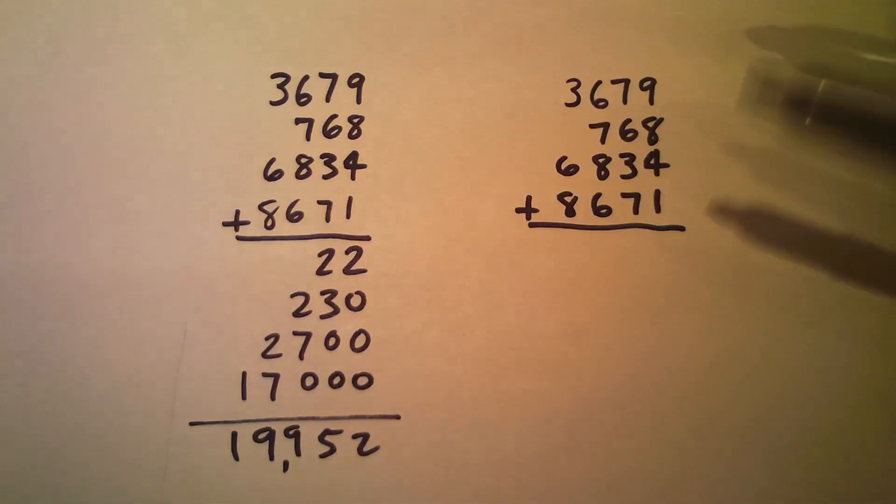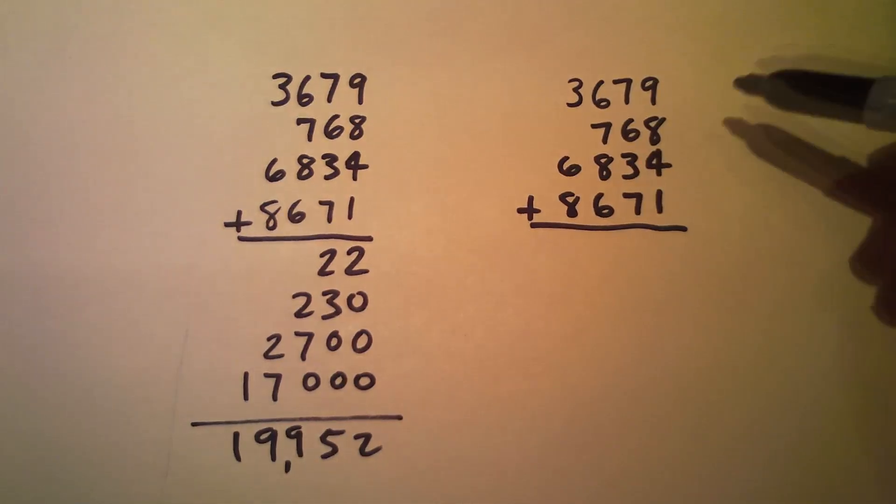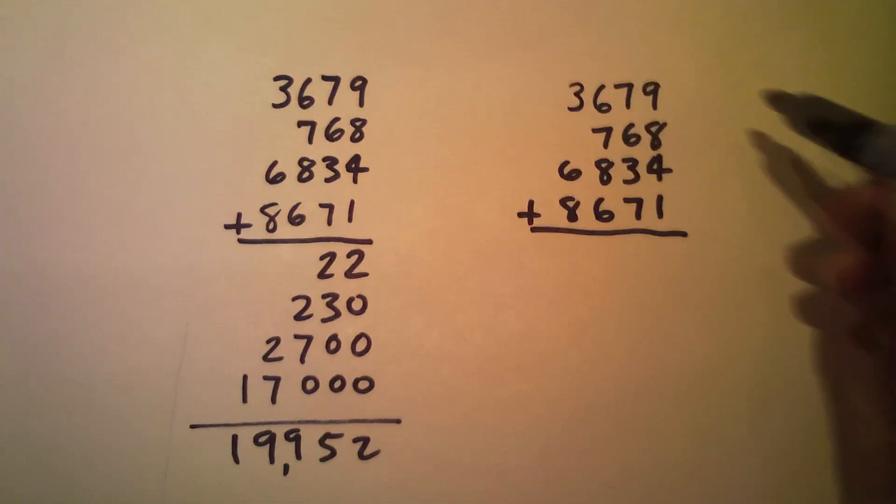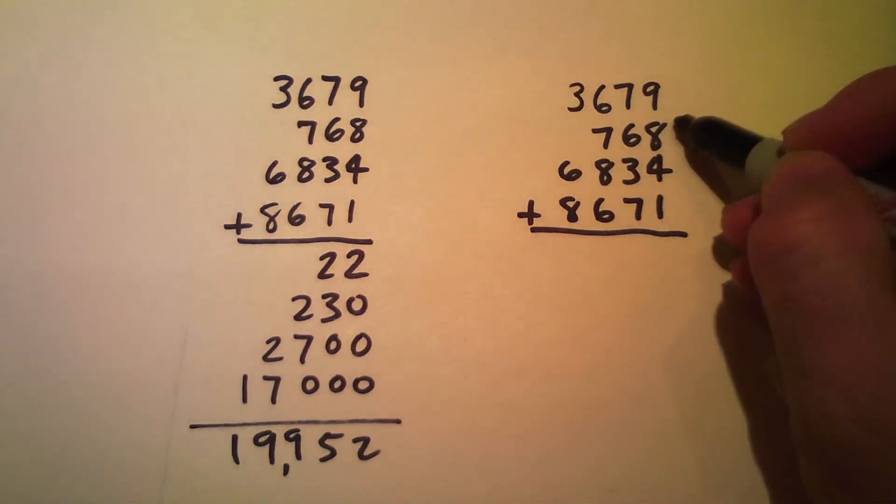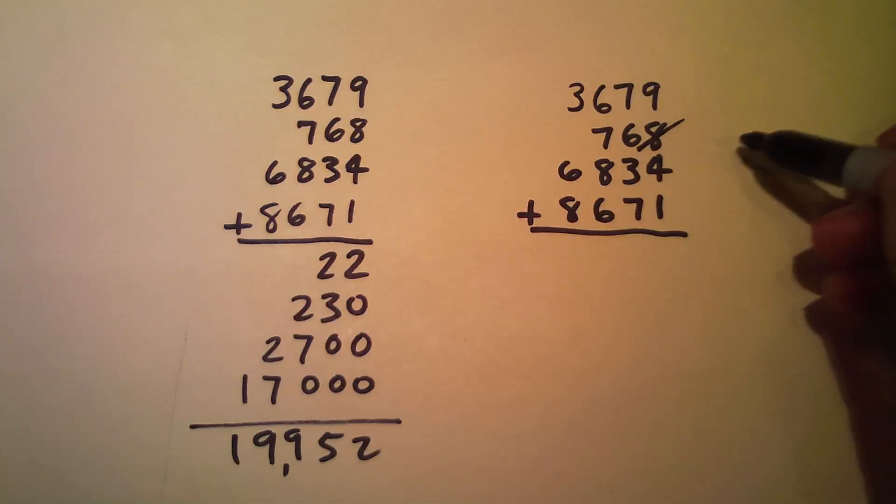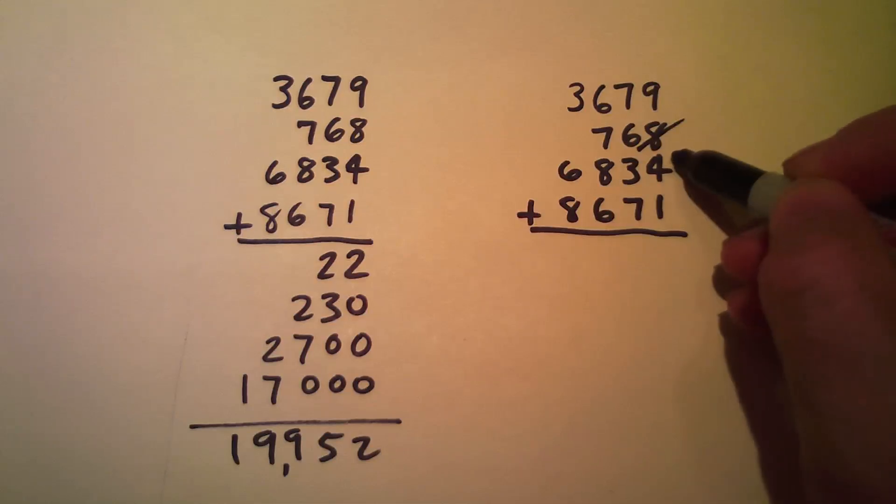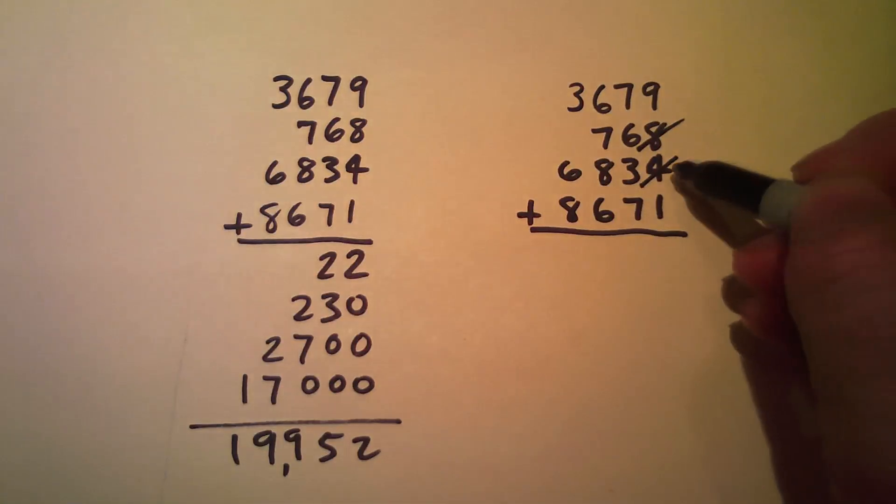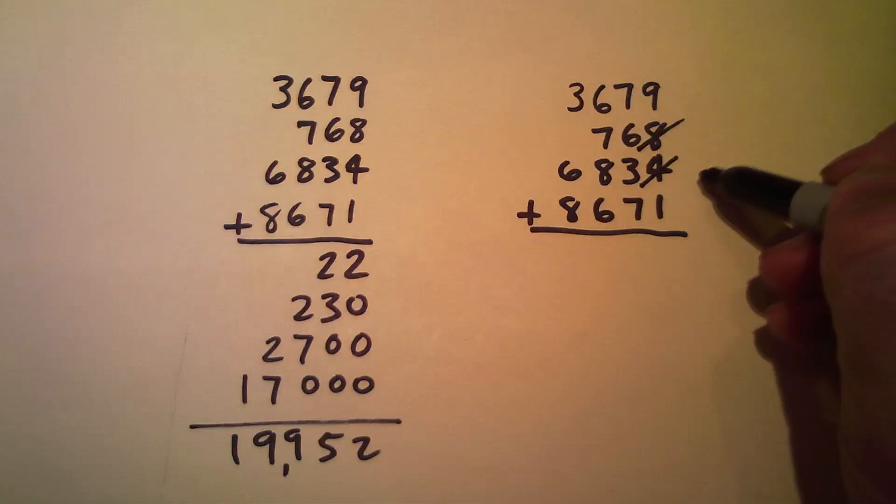But the scratch method, the nice thing is that every time you reach a 10, you put a scratch and just keep up with the ones. So 9 plus 8 is 17, I'm going to put a scratch to the 8 and just remember the 7, 7 and 4 is 11, put a scratch there. I've reached past 10, so 11, I'm just going to keep up with the 1, 1 and 1 is 2.